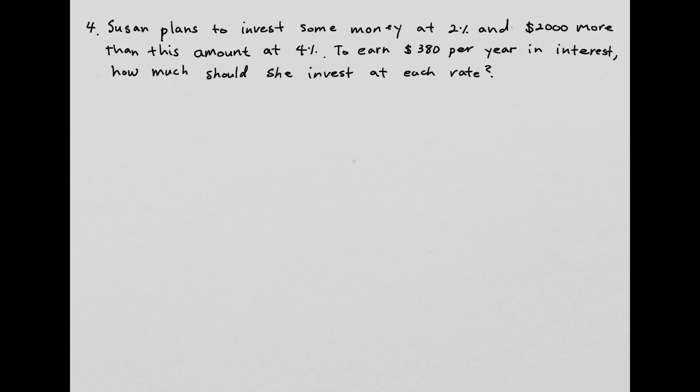Example 4 — we're going to talk about interest formula problems. Susan plans to invest some money at 2% and $2,000 more than that amount at 4%, to earn $380 per year in interest. How much should she invest at each rate? I want to identify what I'm looking for. She has two rates: 2% and 4%.